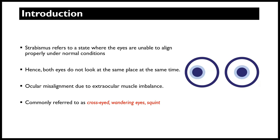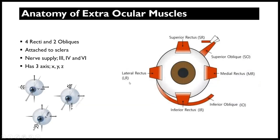Strabismus is commonly referred to as cross-eyed, wandering eyes, or squint — there may be other names in your locality. The main area affected is the extraocular muscles. We know that there are four rectus muscles and two oblique muscles. We have the lateral rectus, the medial rectus — assuming this is where the nose is — then the inferior rectus and the superior rectus, plus the inferior oblique and the superior oblique muscles. All these play a role in pulling the eyeball to different sides, and they are all attached to the sclera.